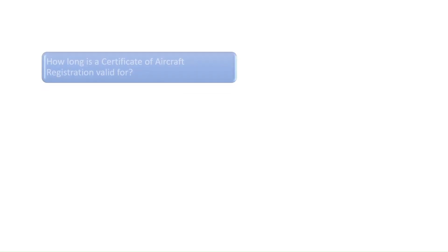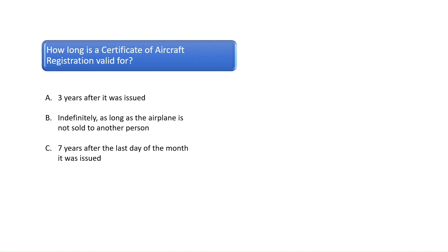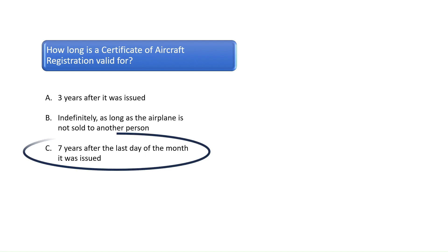Question 10: How long is a certificate of aircraft registration valid for? The answer to this question can be found in FAR Part 47. Certificates of aircraft registration are valid for seven years after the last day of the month in which the certificate was issued. The correct answer is C.